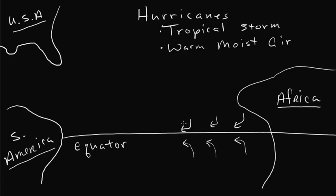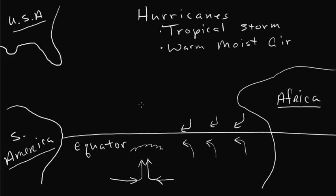If we were to take a different view of it, where the air would be crashing toward each other and converging, these air masses pushing toward each other are going to come and they're going to force each other up. They're going to have nowhere else to go but rise. And when that happens, you end up with clouds and precipitation.